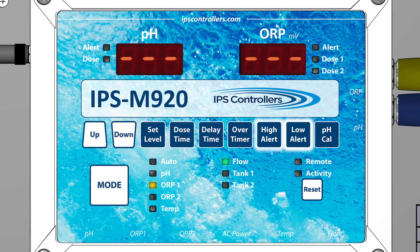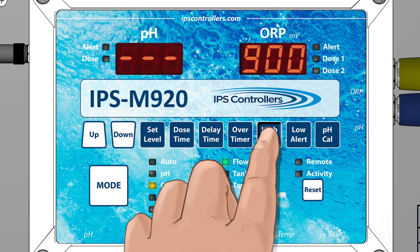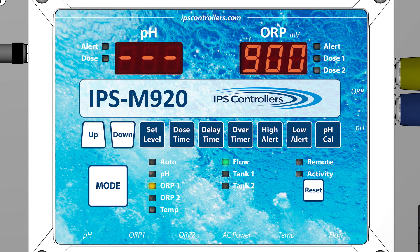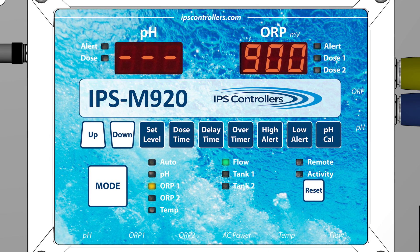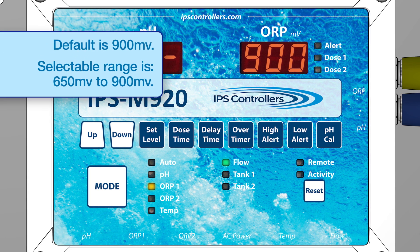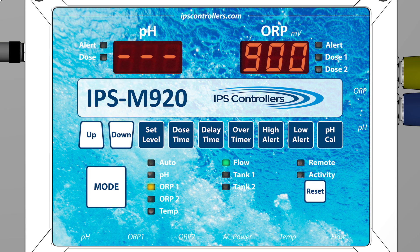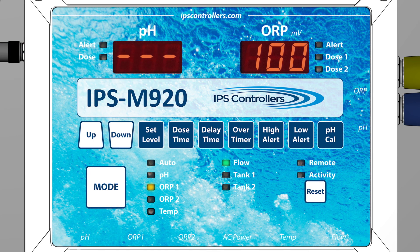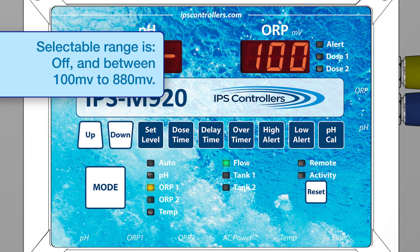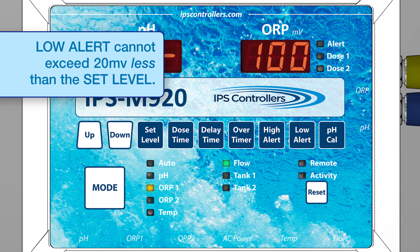The High Alert and Low Alert in the ORP mode operate the same as in the pH mode. The High Alert protects the system from over-sanitizing by disabling the ORP output. A High Alert tells you that your ORP has risen above the High Alert level set by you. The default level is 900 millivolts and the range can be set from 650 millivolts to 900 millivolts. The Low Alert monitors the minimum ORP levels; the selectable range is off and between 100 and 880 millivolts. However, the Low Alert setting cannot exceed 20 millivolts less than the set level.